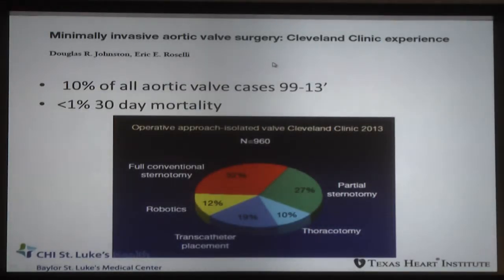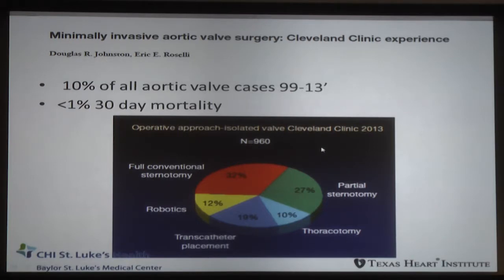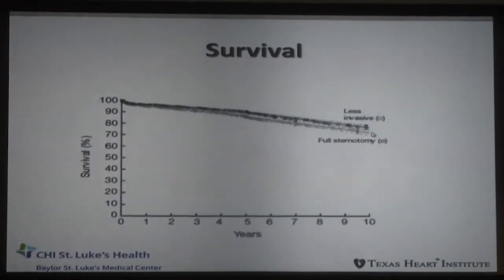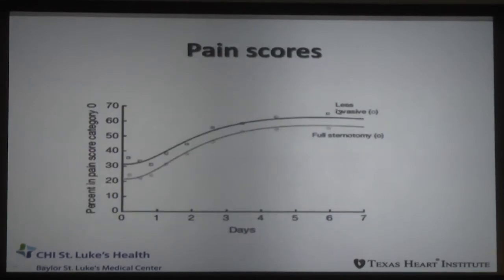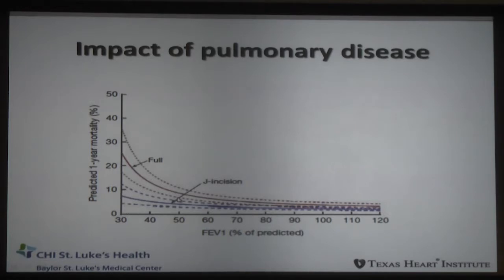When we look at the Cleveland Clinic data — which probably has the most mini-sternotomy approaches — in their latest update published in 2013, about 10% of all aortic valves was done through a mini upper hemi-sternotomy. You can still see 32% of them are still done open, 27% were done partial, half of these for aortic valves — showing that even in a high-volume center, we have to select which ones go where. Survival was identical out to 10 years for less invasive and full sternotomy. Pain scores were superior for less invasive. Patients with pulmonary disease and low FEV1s — particularly between 40 and 50 — had a particular benefit with a mini-sternotomy compared to full sternotomy.